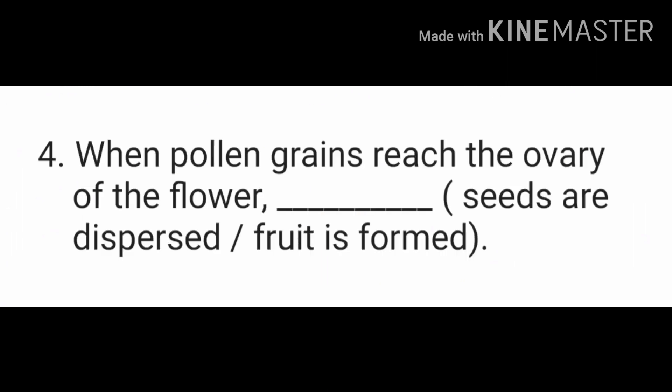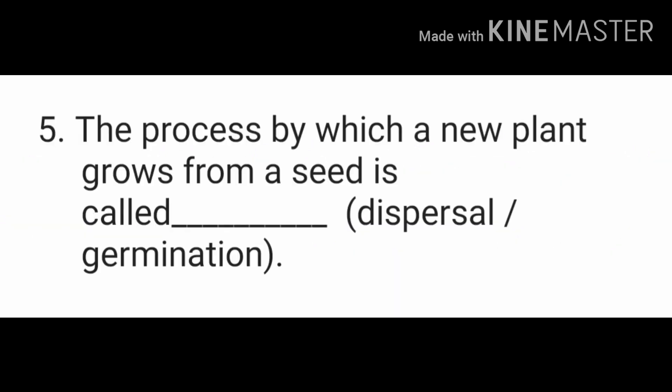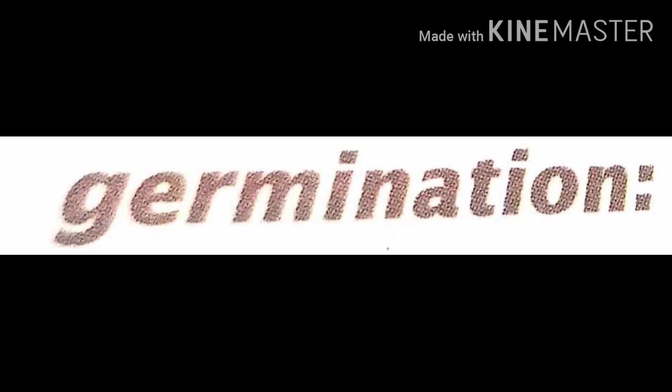Fourth is when pollen grains reach the ovary of the flower, dash. The options are seeds are dispersed or fruit is formed. Fifth one, the process by which a new plant grows from a seed is called dash. The option is dispersal or germination. Yes, the right answer is germination.